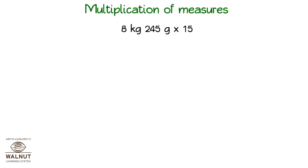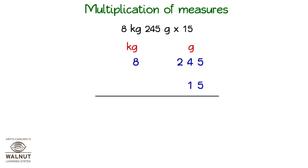Multiplication of Measures. We write the units, and below that we write the measures. Then we get ready to multiply. Look at the unit under Grams — we can see that we have to adjust it.